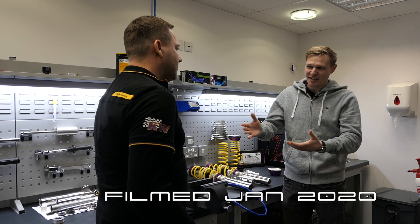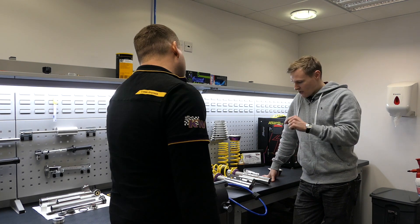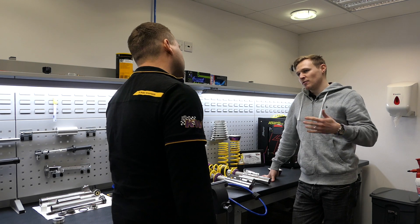Okay, so this is Rich from KW UK. I'm absolutely buzzing to get these on project 996. You guys are twin tube, other aftermarket brands are monotube. What's the difference?